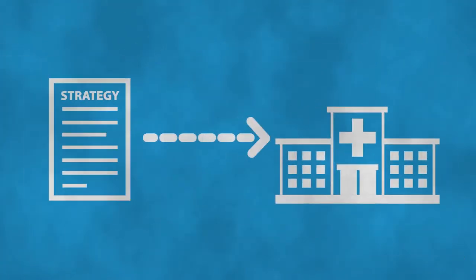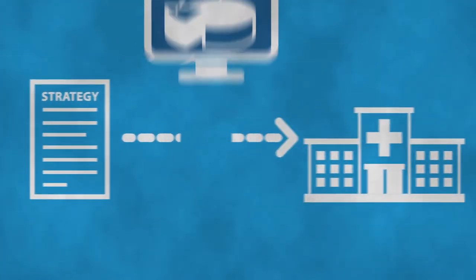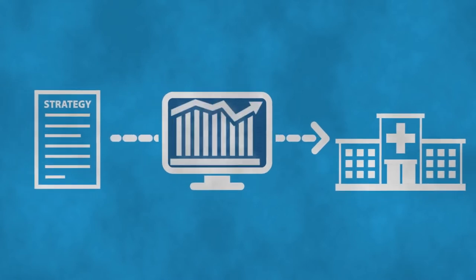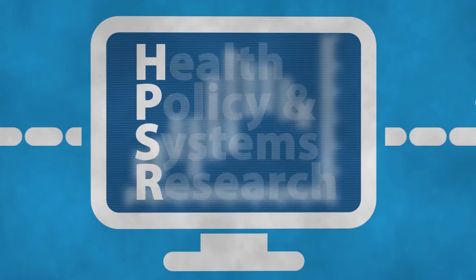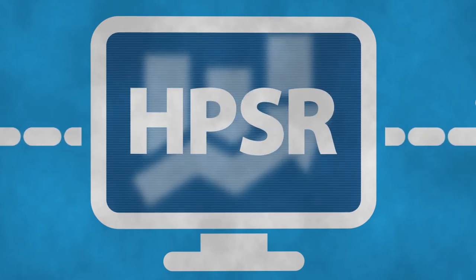But potential strategies need to be guided by evidence from across a range of research disciplines, known together as health policy and systems research, in order to fully understand the social and political complexities of these systems.